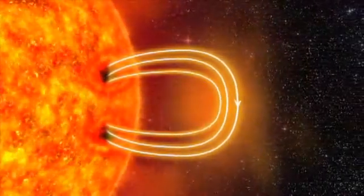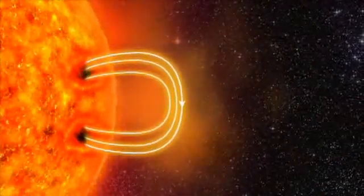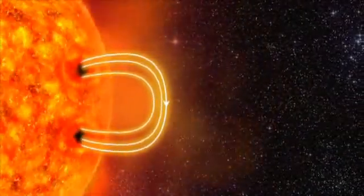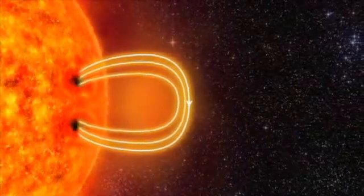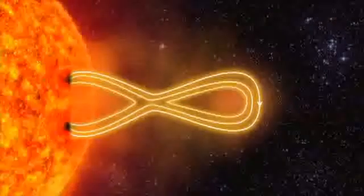The electrically charged gas is called plasma. The plasma drags the magnetic field further outwards. The magnetic field stretches and twists like a rubber band. And then the rubber band breaks.